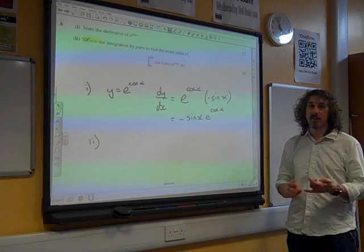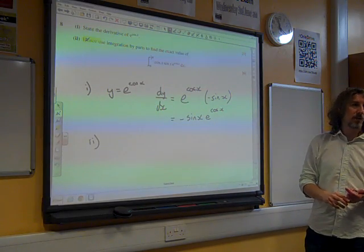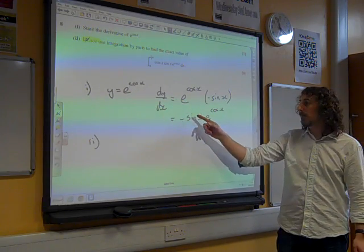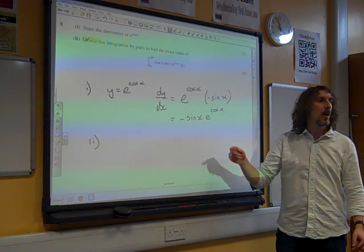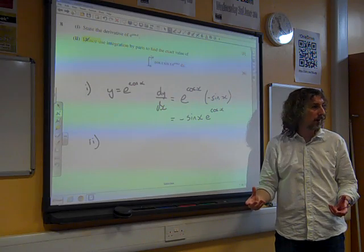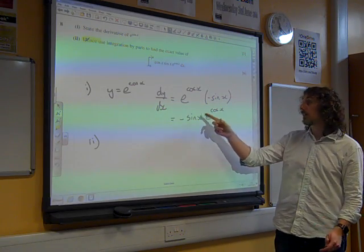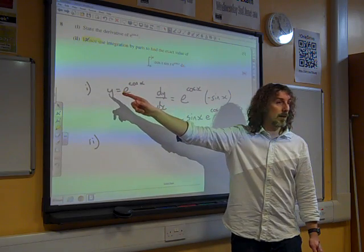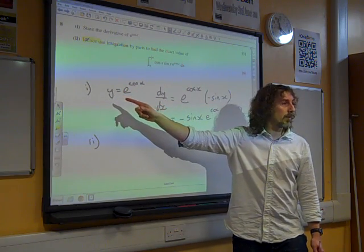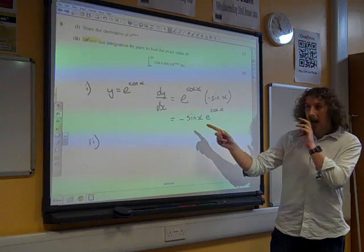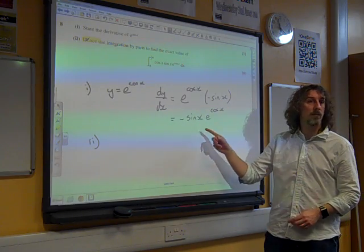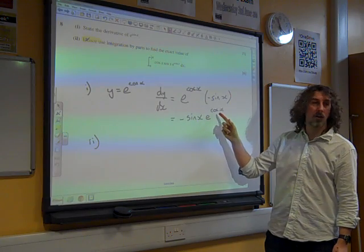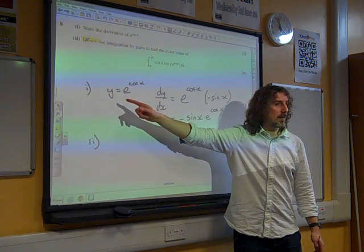So, what we learnt in part one, was that if you differentiate e to the cos x, you get minus sin x e to the cos x. But, that also taught us, that if you integrate sin x e to the cos x, you get e to the cos x. So, that's, that's the important thing. And, actually, that's the more important thing, the reverse of this. If we integrate sin x e to the cos x, we get e to the cos x.